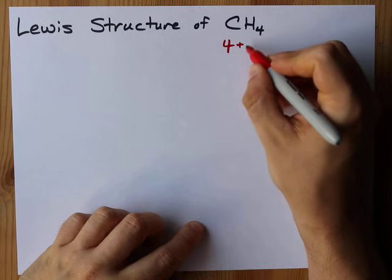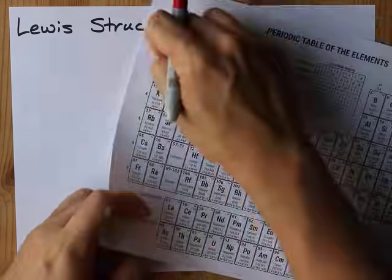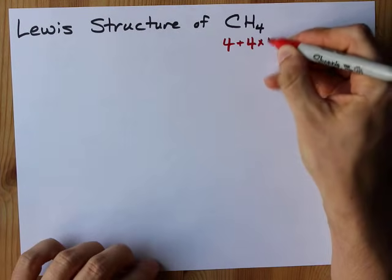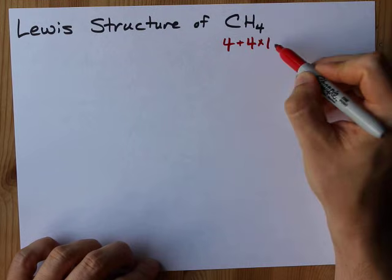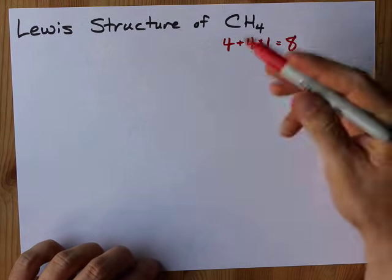And I'm gonna add on, oh I have four hydrogens. How many does each hydrogen bring? It's in column one so it brings one electron each. That means four and four ones make eight electrons total that I have to deal with in this structure.